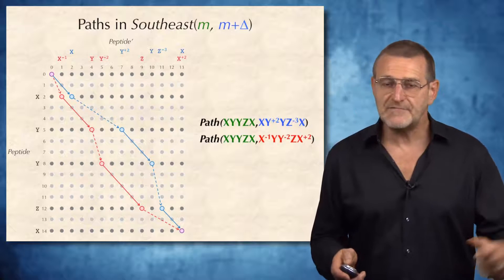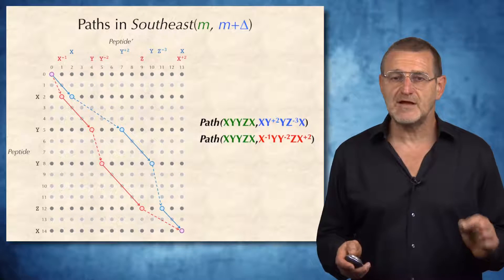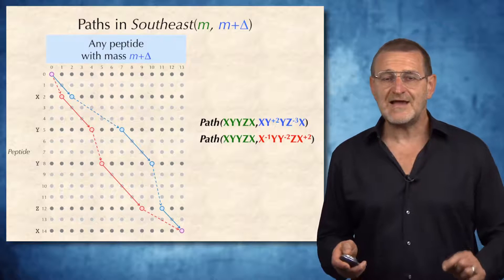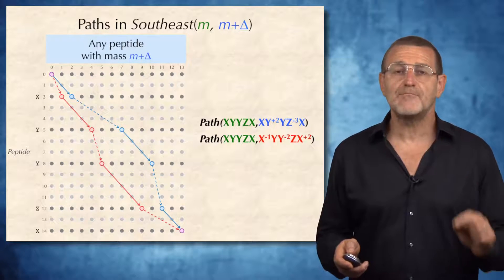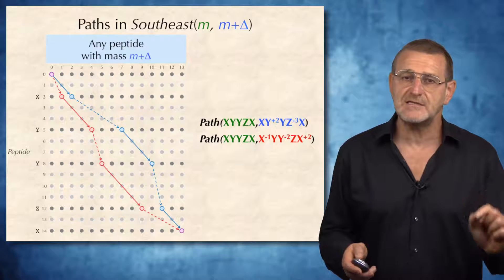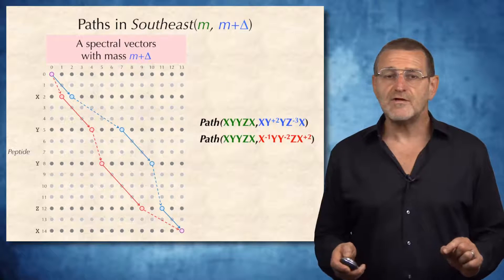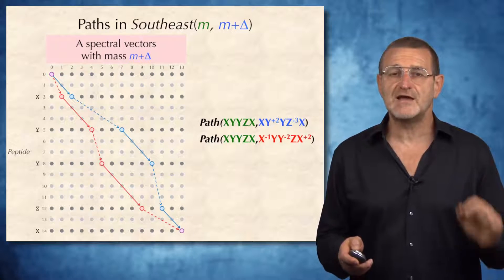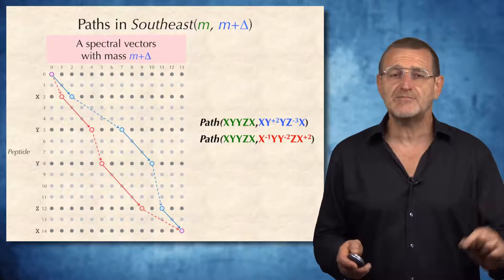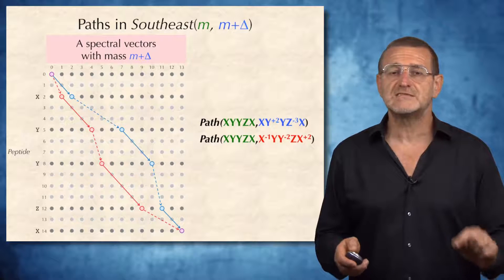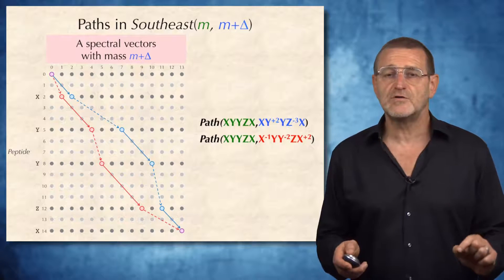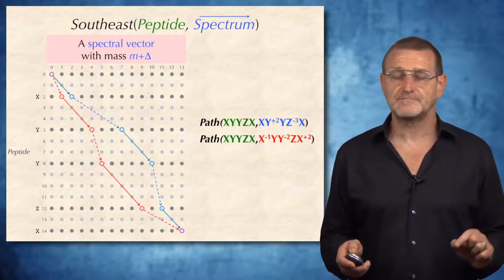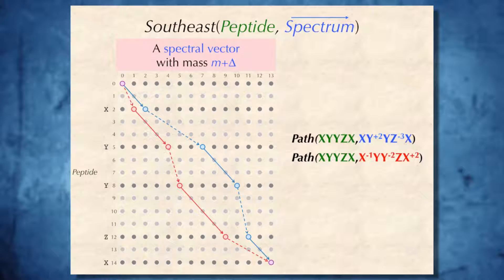So we will consider different paths in the South-East M M plus delta, and in fact, any peptide with this mass M plus delta will correspond to a path in the South-East graph. Moreover, we can substitute these paths by a spectral vector with mass M plus delta, and therefore any possible interpretation of a spectral vector with mass M plus delta will correspond to a path in this graph. Therefore, I will rename this South-East graph into the graph that is denoted South-East peptide spectrum.